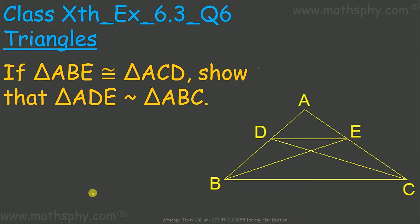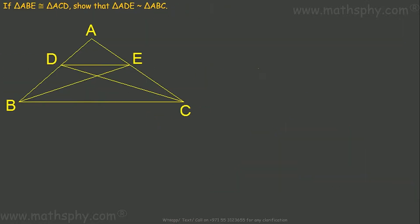The question says: if triangle ABE is congruent to triangle ACD, show that triangle ADE and triangle ABC are similar.